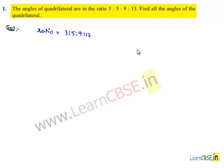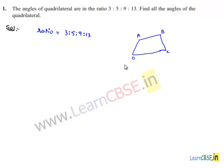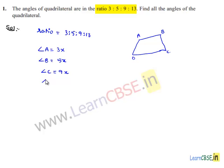Let us assume a quadrilateral ABCD. Then angle A, angle B, angle C, and angle D will be the angles of the quadrilateral. Let us assume angle A is equal to 3x, angle B is equal to 5x, angle C is equal to 9x, and angle D is equal to 13x, according to the ratio.